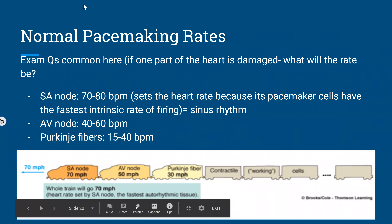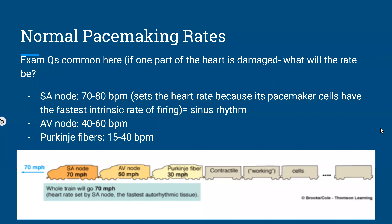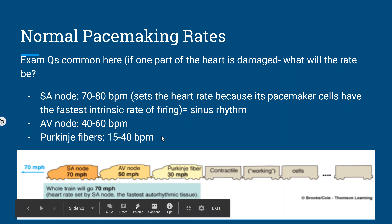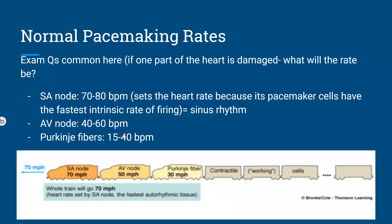The normal pacemaking rates of each nodal tissue are really important. The SA node sets the heart rate in a healthy person because its pacemaker cells have the fastest spontaneous firing rate, creating sinus rhythm. If the SA node is damaged, the AV node takes over at a lower rate. If the AV node is also damaged, the Purkinje fibers take over. Knowing these rates helps identify the location of damage — for example, after a myocardial infarction.